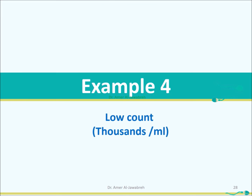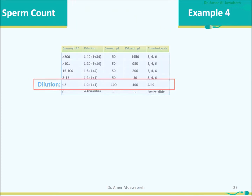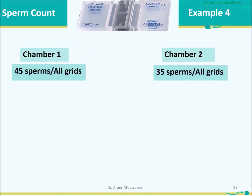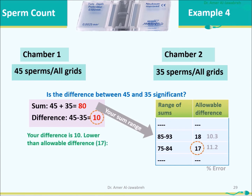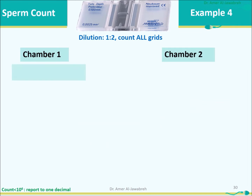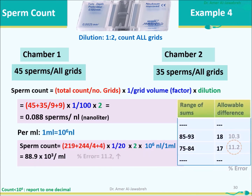Example 4 — Very low count (thousands per mL). Average prep count: 2 per high power field; dilution is 1:2 using 100 µL of semen. All 9 grids in chambers 1 and 2 are counted. The difference between counts of 10 is lower than allowable 17 — accept count. Sperm count = (45 + 35) / (9 + 9) × 1/100 nL × dilution 2 = 0.08 sperms per nL = 88.9 thousand per mL, left without rounding. Percent error is 11.2%, which is high, leaving some doubt on accuracy.